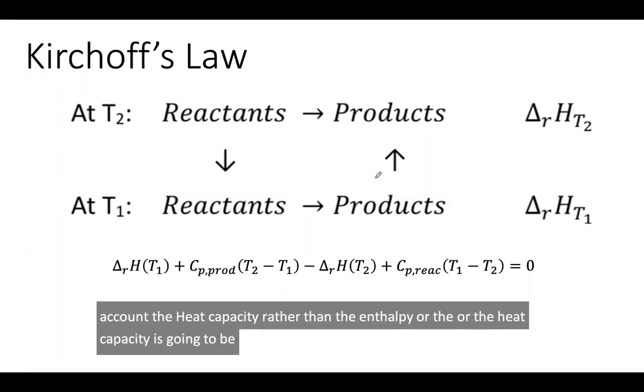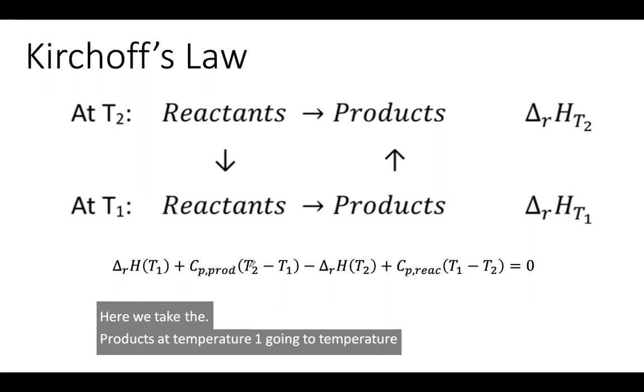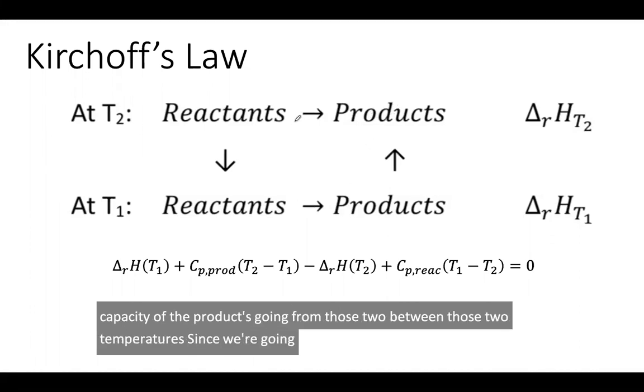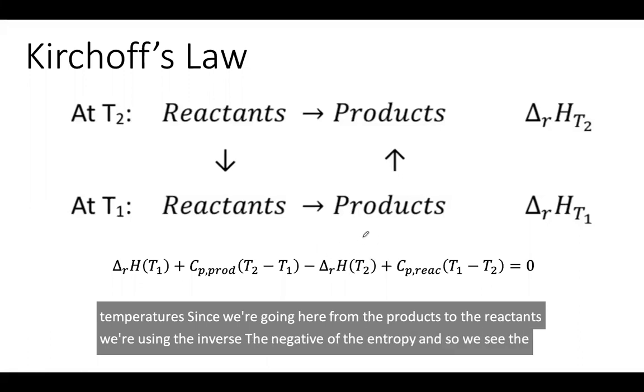Here we take the products at temperature one going to temperature two, we can use the heat capacity of the products going between those two temperatures. Since we're going here from the products to the reactants, we're using the inverse, the negative of the enthalpy. And so we see the negative enthalpy at that second temperature.